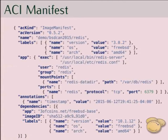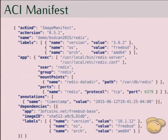A sample manifest looks like this. It has a name — we'll hopefully be running the image built from this manifest today. It has labels like version numbers, operating system, and architecture, which you can use to discover the image. It has an application that it runs, executing the Redis server as a specified user and group. It has mount points which should be fulfilled when the application is started, it publishes a port, it has a timestamp, and it has dependencies — this is how inheritance is implemented in the spec.